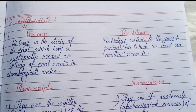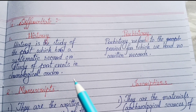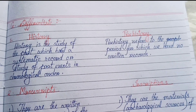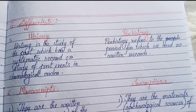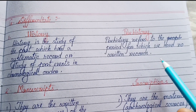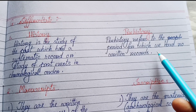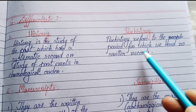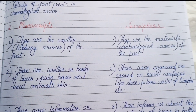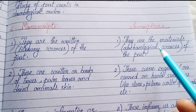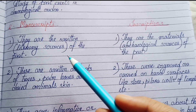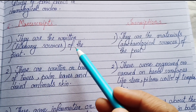Section G: Differentiate between history and prehistory. History is the study of the past which has a systematic record of past events in chronological order. Prehistory refers to the period for which we have no written records. Next, differentiate between manuscripts and inscriptions. Manuscripts are written literary sources of the past, while inscriptions are material or archaeological sources of the past.